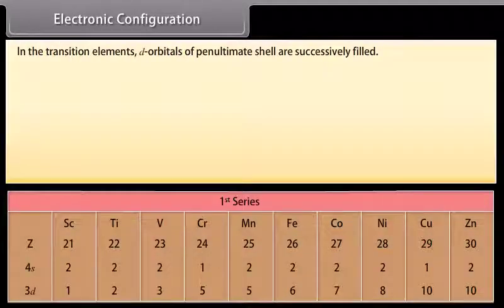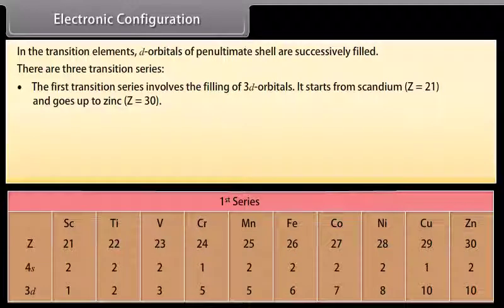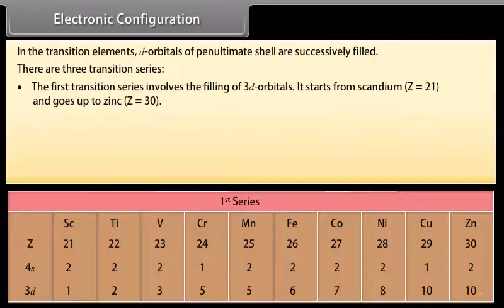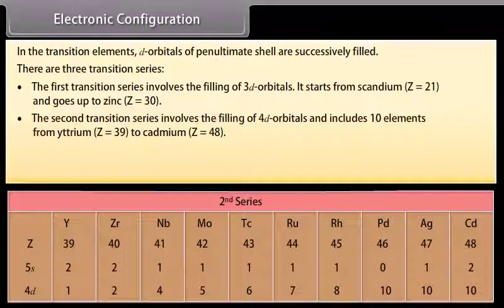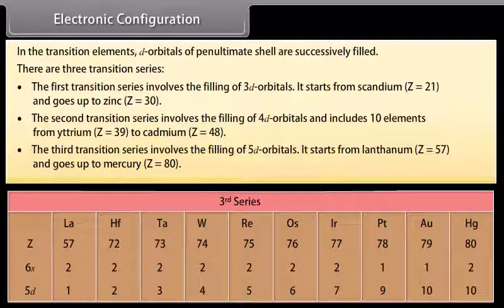In the transition elements, D-orbitals of the penultimate shell are successively filled. The first transition series involves the filling of 3D orbitals, starting from scandium and going up to zinc. The second transition series involves the filling of 4D orbitals and includes 10 elements from yttrium to cadmium. The third transition series involves the filling of 5D orbitals, starting from lanthanum and going up to mercury.